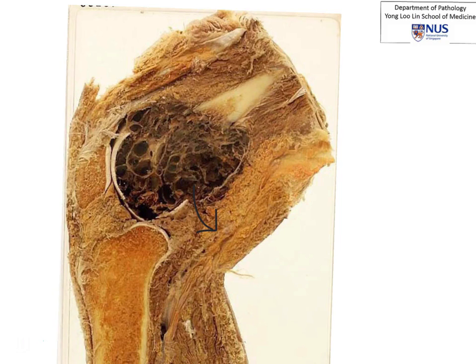On the cut surface, it's pretty hemorrhagic. It is dark brownish, and there appears to be some whitish, fibrous, streaky areas.